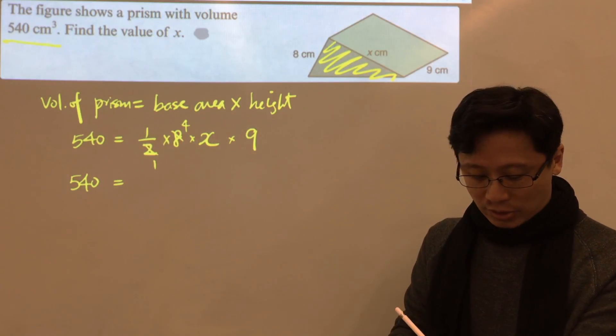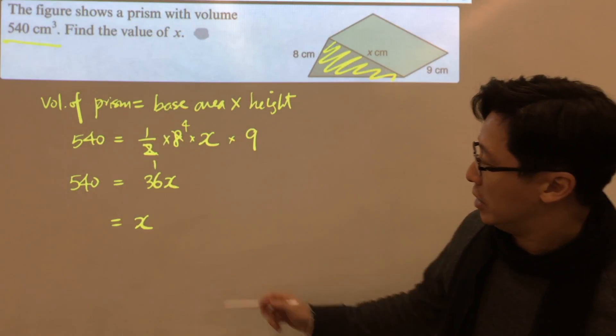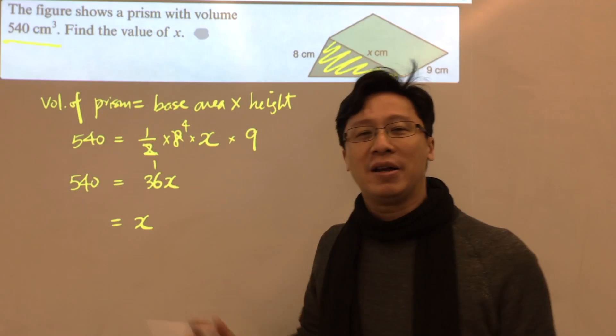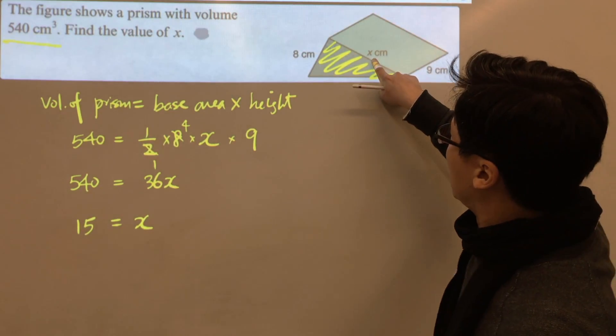4 times 9, you get 36x. And finally if you divide both sides by 36, therefore x should